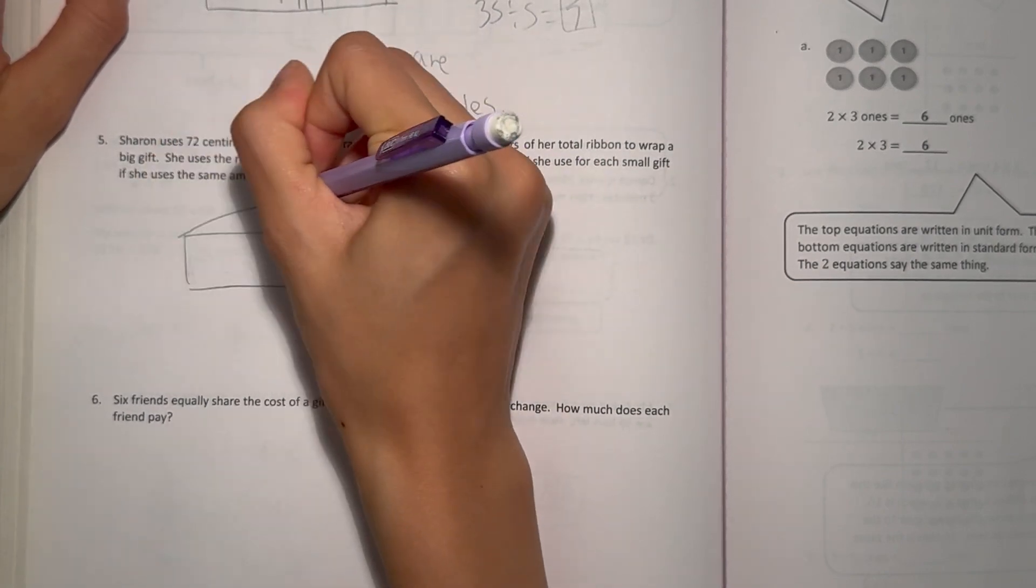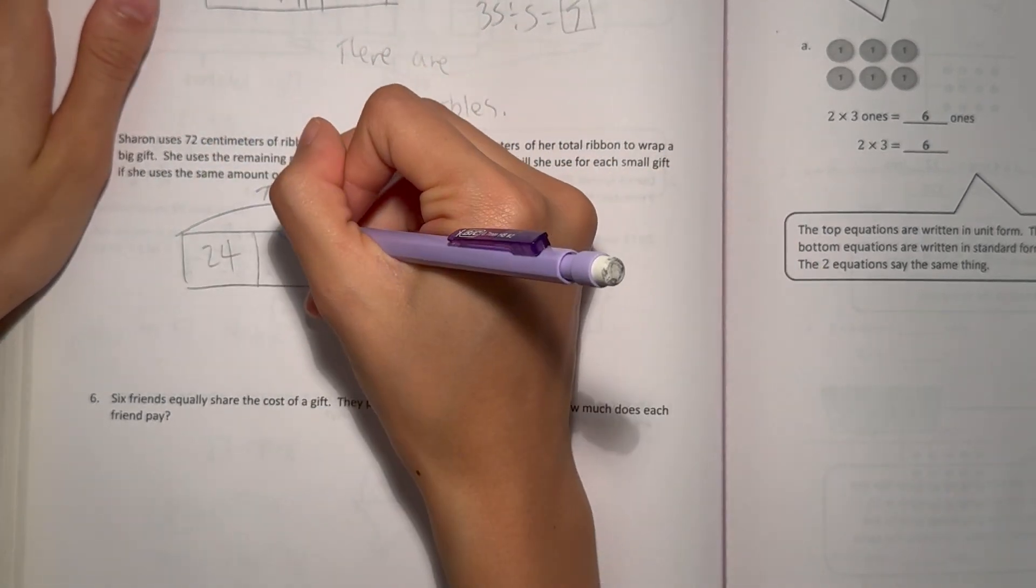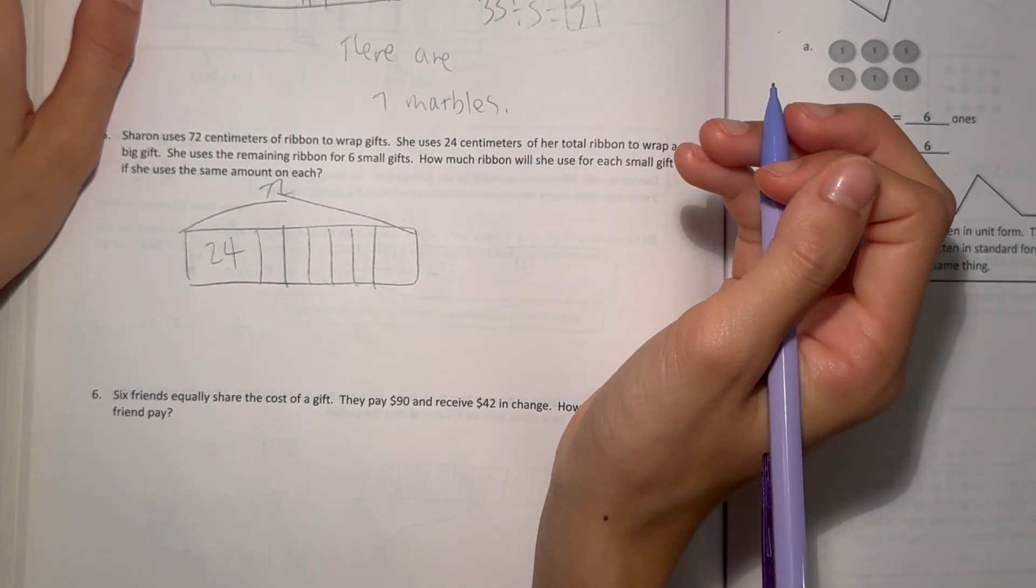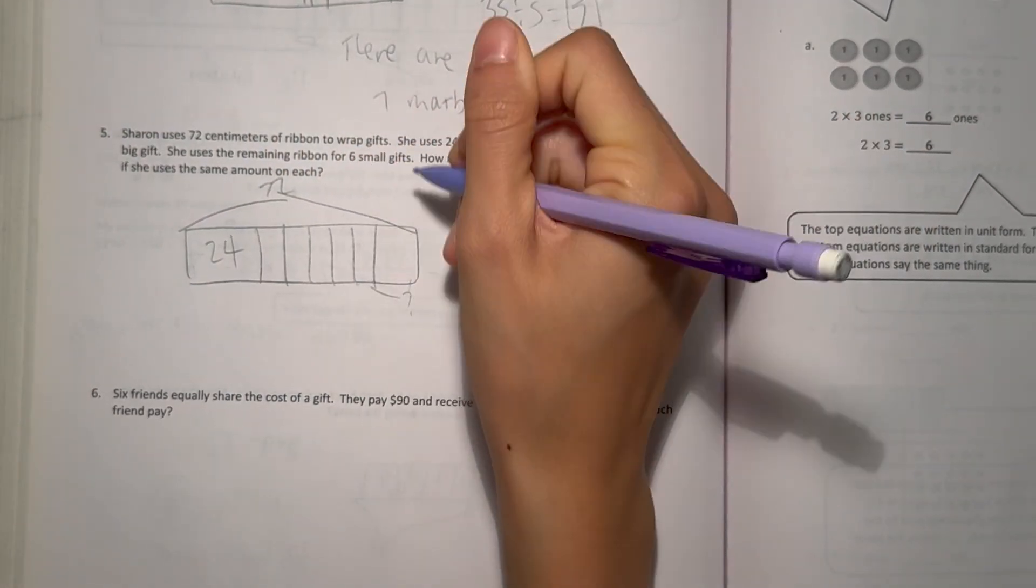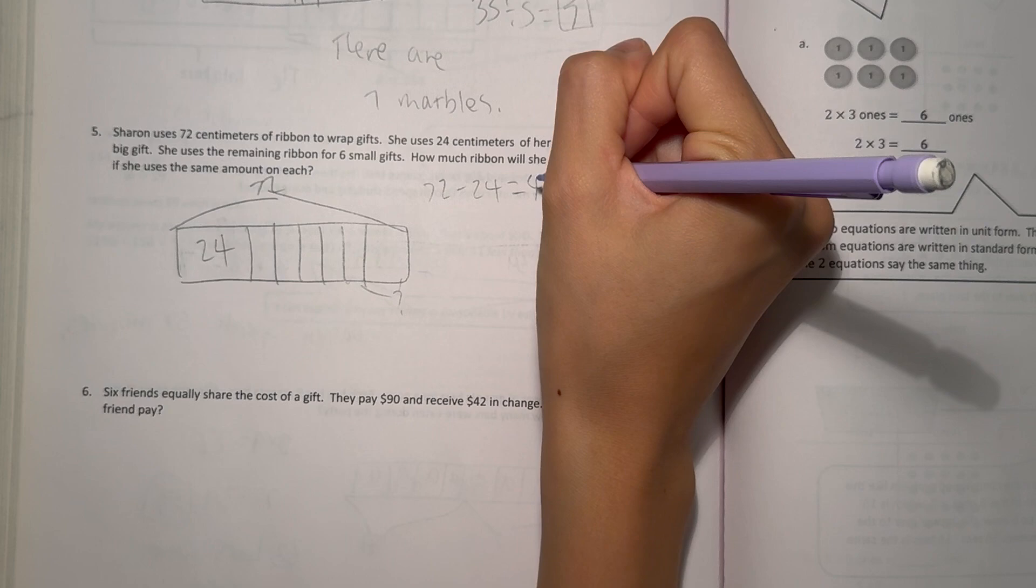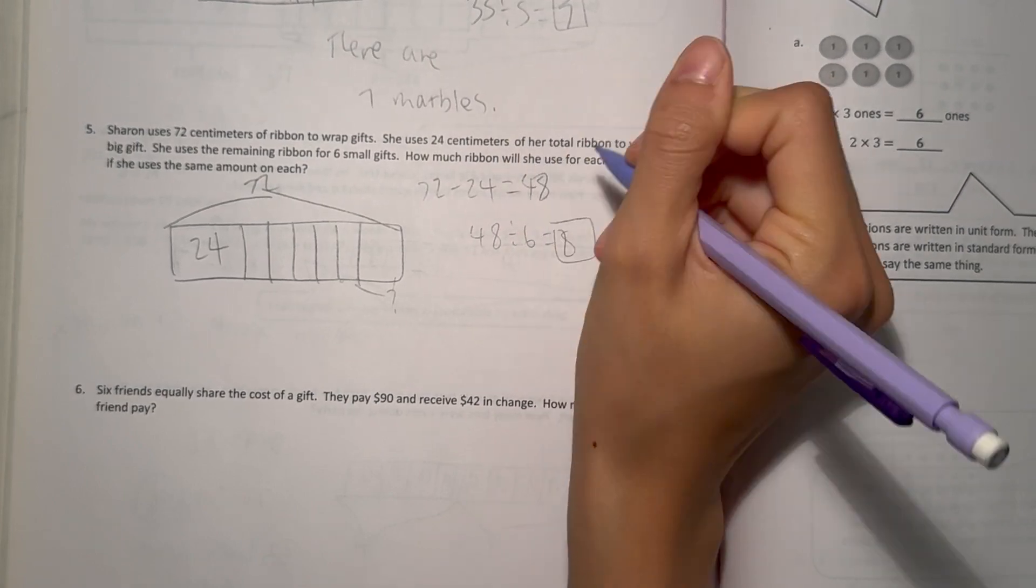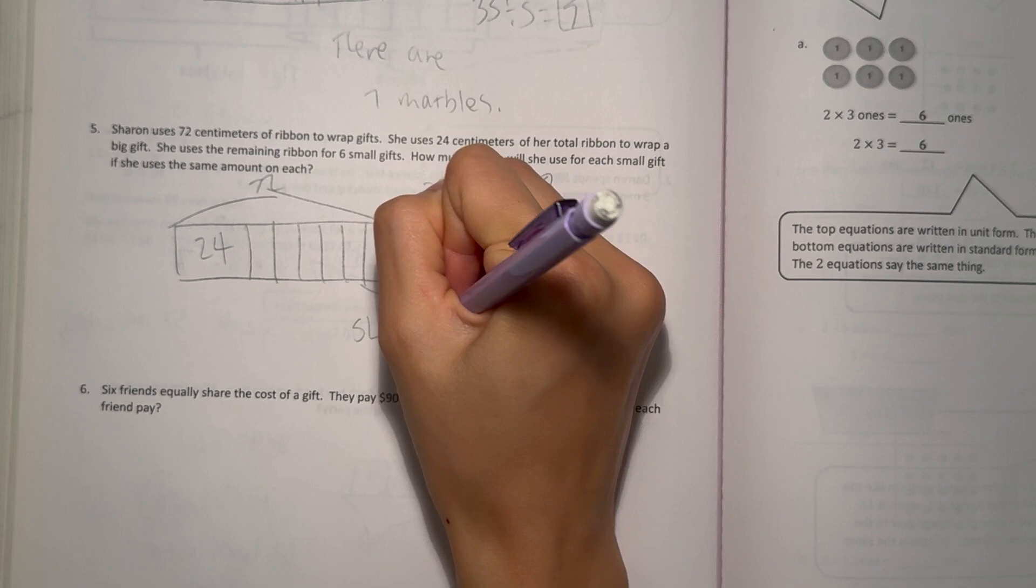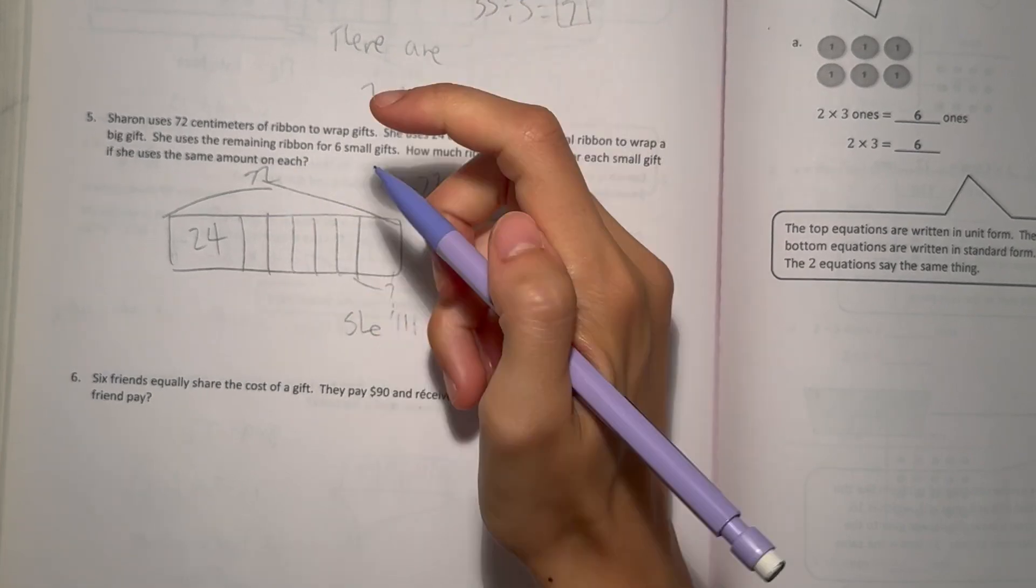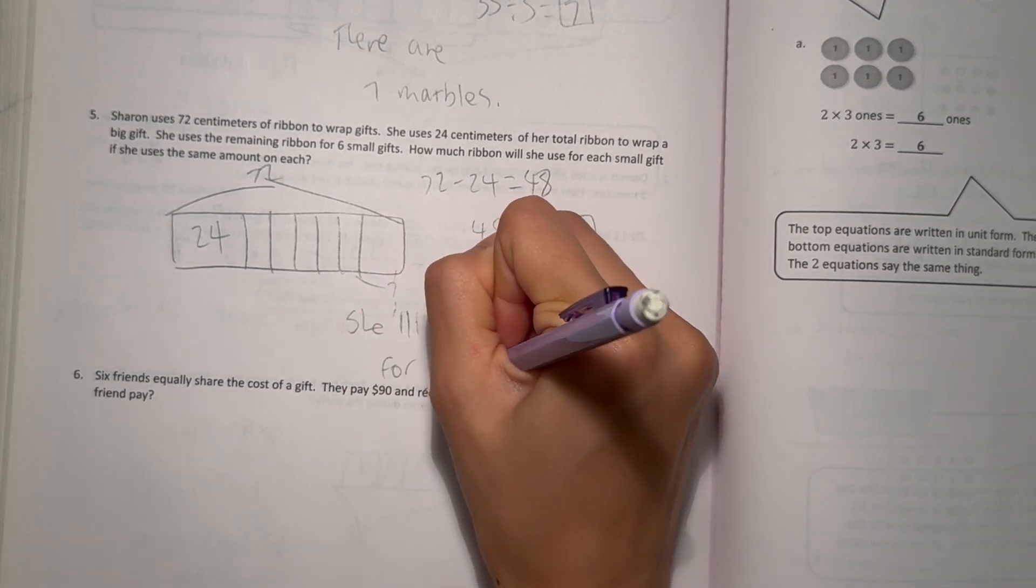Alright, so we know the total we have is 72. And she uses 24 of it on a big gift. The rest is for 1, 2, 3, 4, 5, 6 small gifts. So how much ribbon will she use on each small gift? Well, 72 minus 24. 72 minus 24, that's 48. And then 48 divided by 6 small gifts would be 8. So that means she'll use 8 centimeters for each gift.